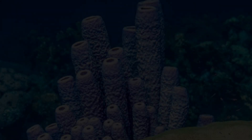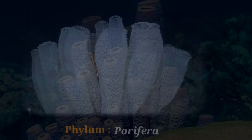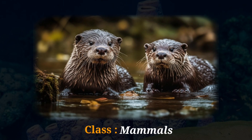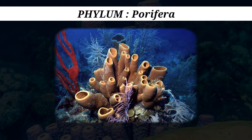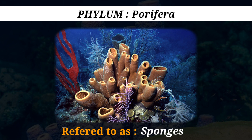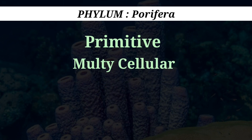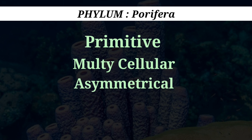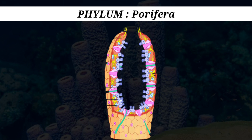Let's take a look at the important characteristic features of the phylum Porifera, from the class mammals. The first phylum among invertebrates is Porifera. The members of this group are referred to as sponges. These are basic, multicellular, asymmetrical, marine creatures, with a cellular level of organization. The body of sponges is supported by a skeleton comprised of spicules.